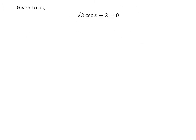Given to us: square root of 3 times cosecant of x minus 2 is equal to 0. If we take the minus 2 to the right hand side of the above equation, we get square root of 3 times cosecant of x is equal to 2.